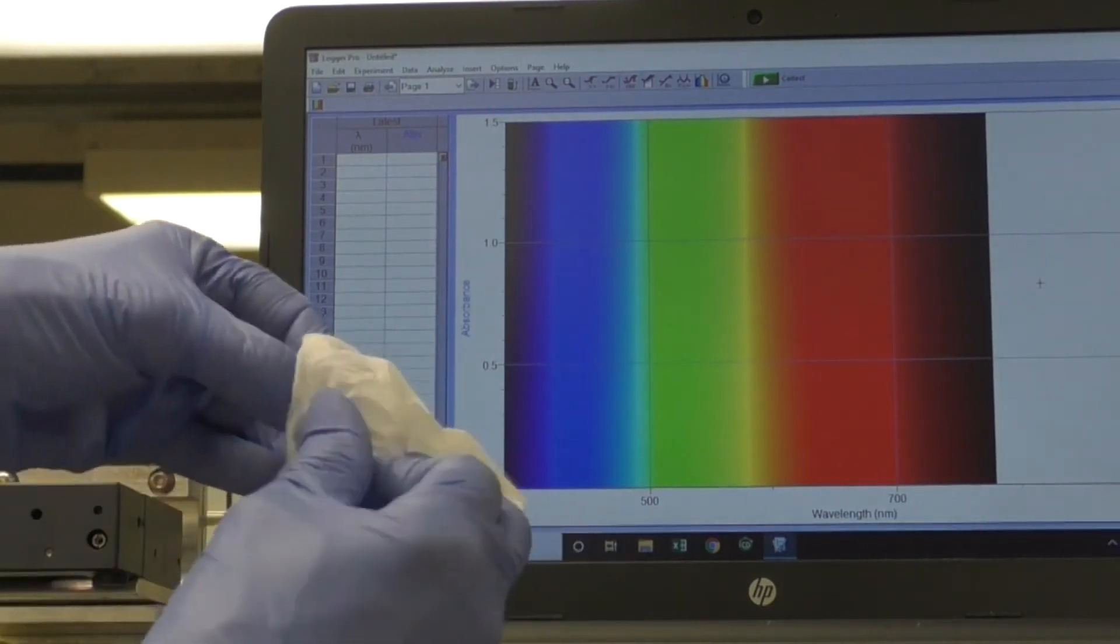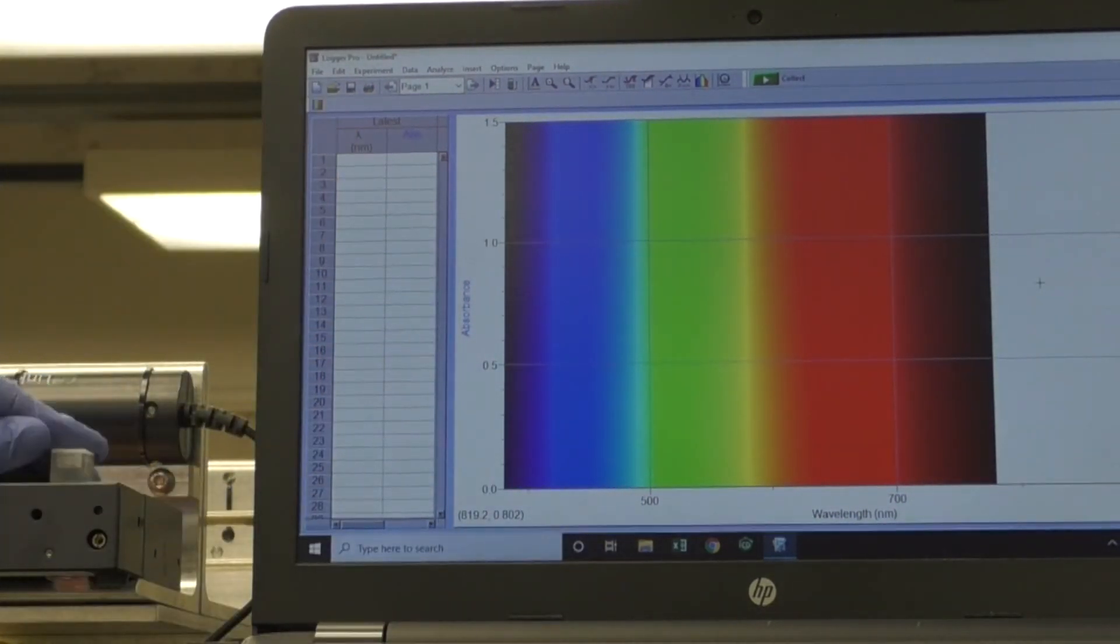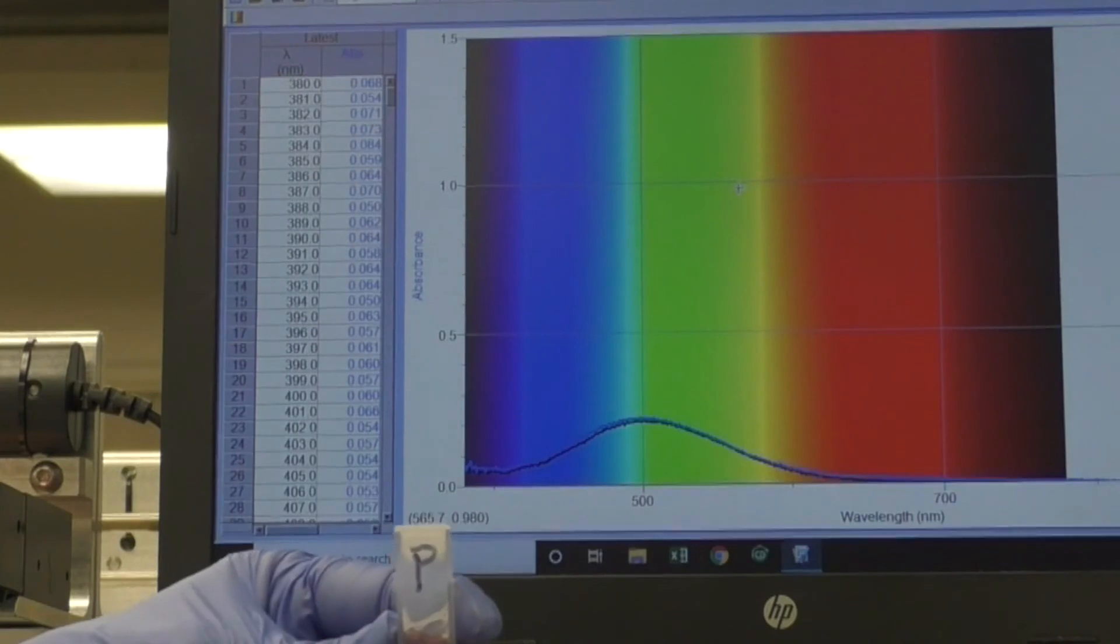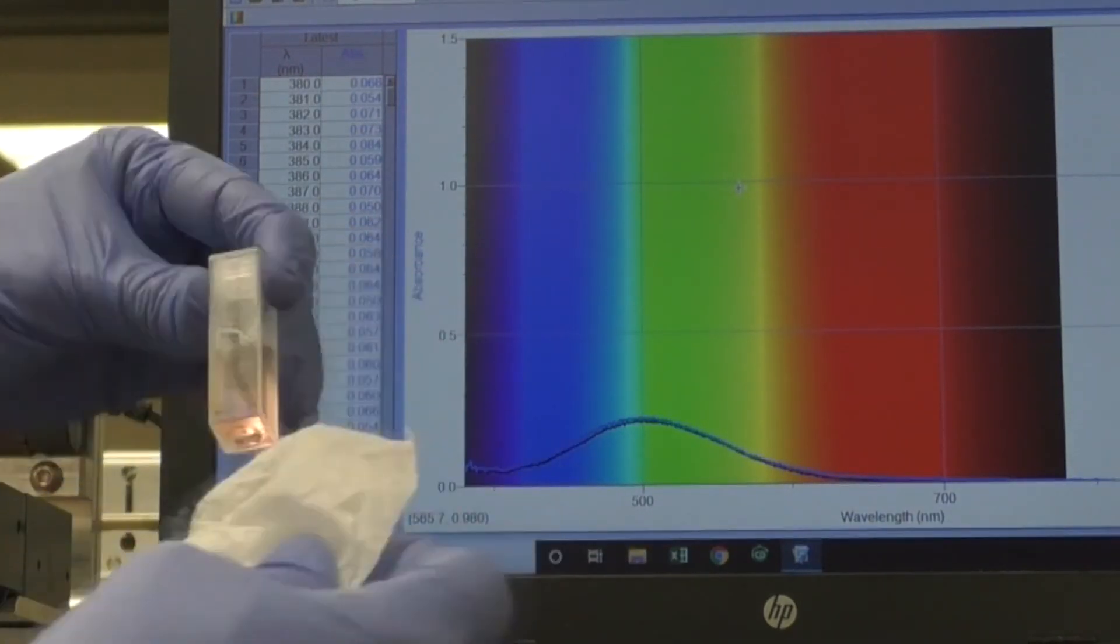When 5 minutes has passed, wipe the standard cuvette, place it in the spectrometer and click collect. Wait a few seconds and click stop. Repeat this being sure to choose save latest run with the patient's cuvette.